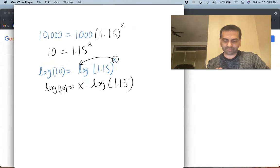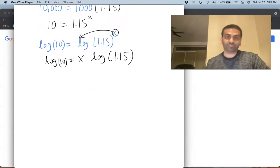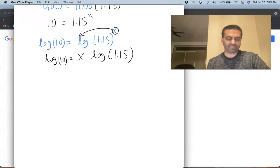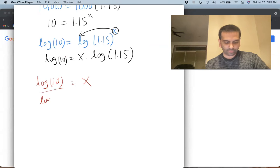And this side is just log of 10. Now log of 10 conveniently is just a nice number, it's just one. But let's say you didn't know that or let's say it was some other number. It's still just some number equals x times some other number. So the way to solve for x is just divide both sides by this guy. So you have just x equals log of 10 over log of 1.15. And that's your answer.